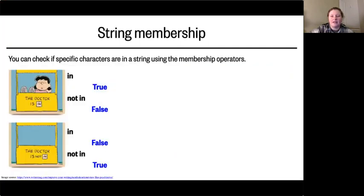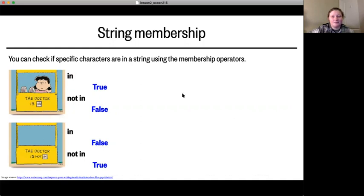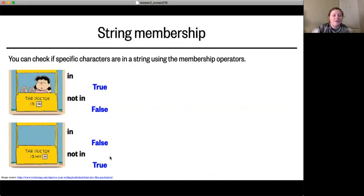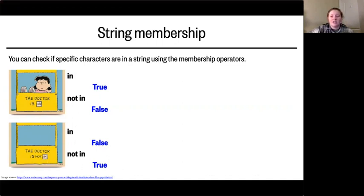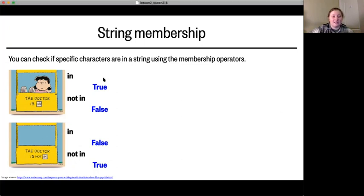To check if a certain character is inside a string, you can use the membership operators `in` and `not in`. Using a cartoon analogy: if you ask if the doctor is 'in' and they are, the answer is True; if you ask if the doctor is 'not in' and they are there, the answer is False. On the flip side, if they're absent, 'in' returns False and 'not in' returns True. You can test if a character is in a string using `in` or `not in`, and it returns a boolean True or False.